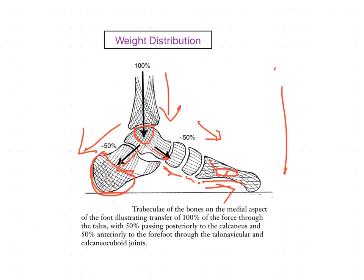In static standing, the distribution of weight bearing can be variable and largely depends upon the foot type, whether it may be pes planus (flat foot), pes cavus (high arched foot), or normal arches.